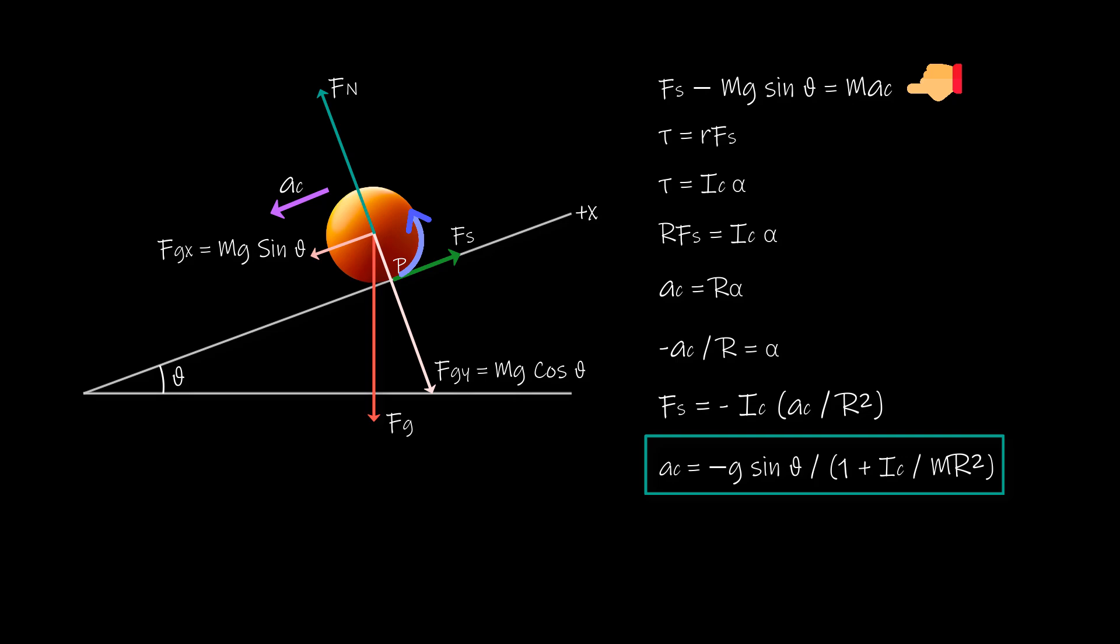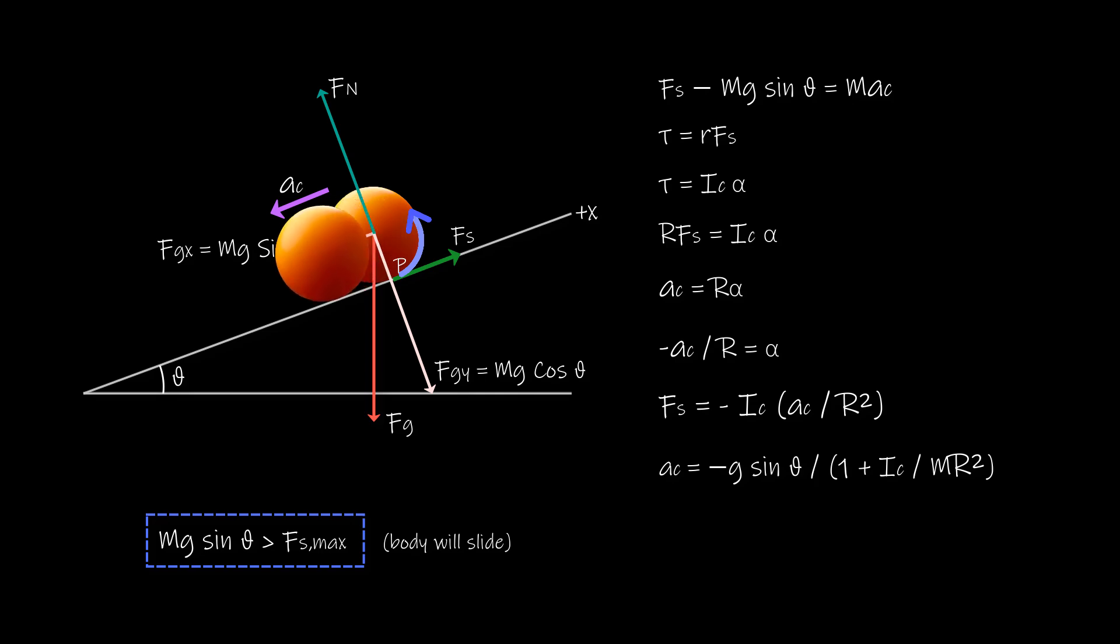It would be worth noting that here it is a pull by the gravitational force that causes the body to come down the ramp but it is the force FS or the frictional force that causes the body to rotate and thus roll. If you could make MG sine theta greater than FS max or get rid of the friction by say putting oil or grease you will have a situation where the body ends up sliding down the ramp instead of rolling.